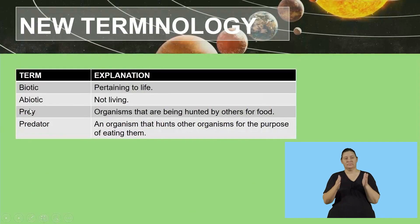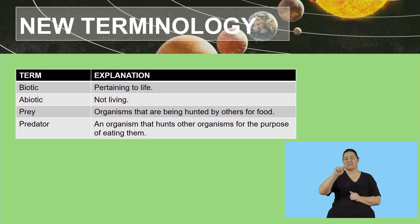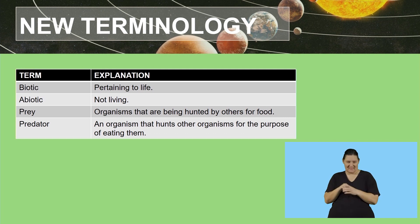We are going to move on to new terms that are going to be introduced during this lesson. The first word is biotic — the term biotic means pertaining to life, relating to life, or having to do with life. The second one is abiotic, which means not living. So biotic has to do with life and abiotic means not living.